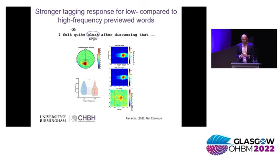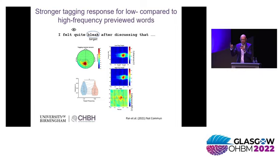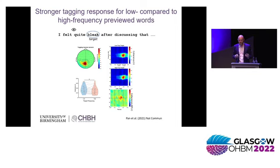What we can now do is compare the flicker response to high and low frequency words in the parafovea. The key finding is that we get a stronger response for a low-frequency target word when we are fixating on the pre-target word. This means that when you are reading a sentence and fixate on a word, if the upcoming word is a rare word, you get a stronger previewing effect compared to when it's a more common word. This turns out to be quite robust statistically. So now we have evidence for parafoveal processing at the lexical level — new insight that we could not have obtained with eye tracking alone.